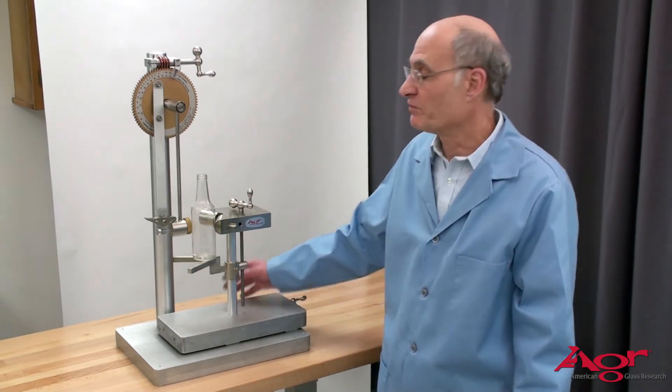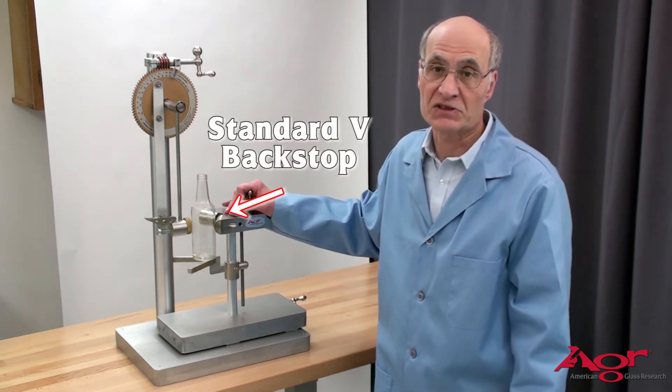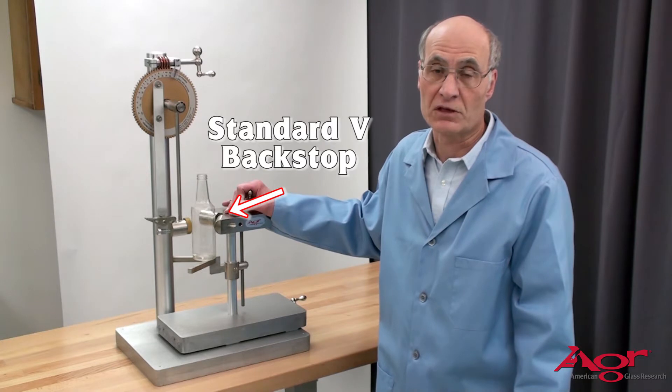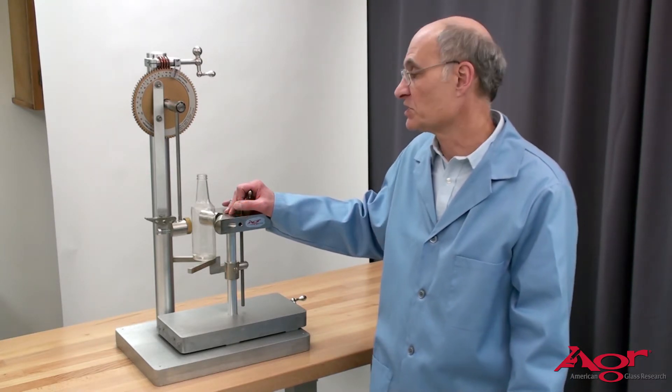The first thing is the type of backstop. For a lot of testing today we will use a V-backstop because it works well with brown bottles. It automatically centers the bottle so you don't have to worry about position so much.